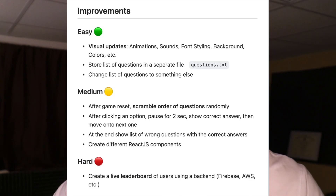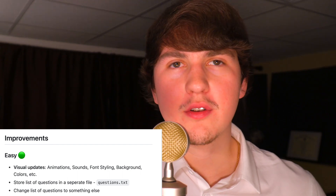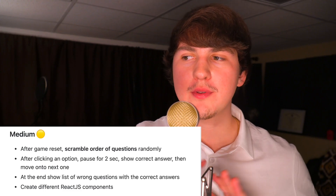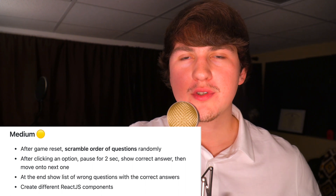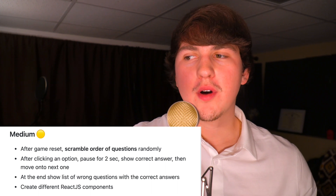That's going to wrap up this tutorial. Here are some improvements you can make. For easy improvements: visual updates like animations, sounds, different font styling, changing the background and colors; store questions in a separate file and import into app.js; or simply change the questions. For medium: scramble the order of questions randomly; pause for two seconds after an answer to show if they were correct; show a list of wrong questions with correct answers at the end. For hard: create a live leaderboard using a backend like Firebase or AWS. Thank you for watching — if you like this content, like and subscribe!